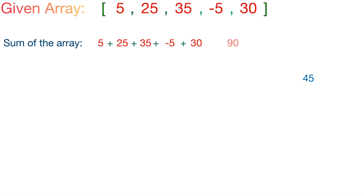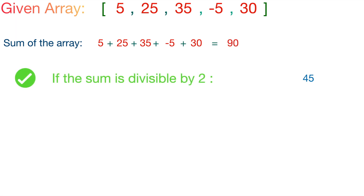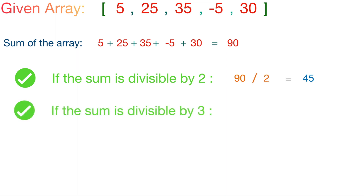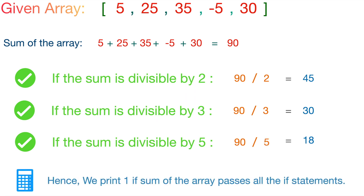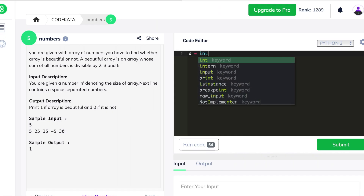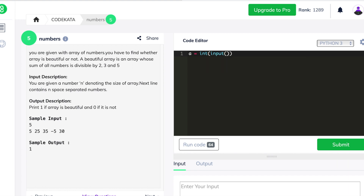First we have to calculate the sum. We should check whether this sum of the array is divisible by 2, 3, and 5 using the modulo operator. Using an if-condition, we check whether the sum is divisible by 2, 3, and 5, and return 1 if that statement is true, else we return -1. Now let's step into the coding part.